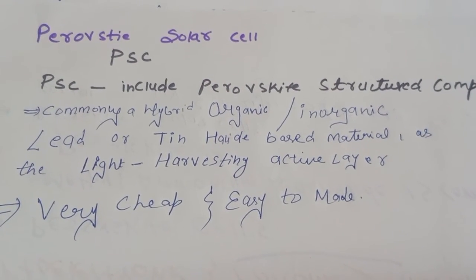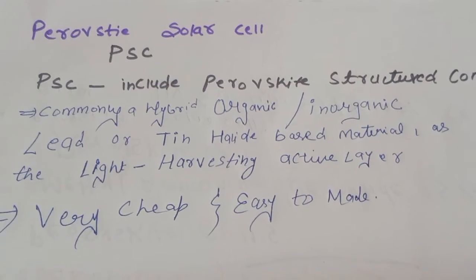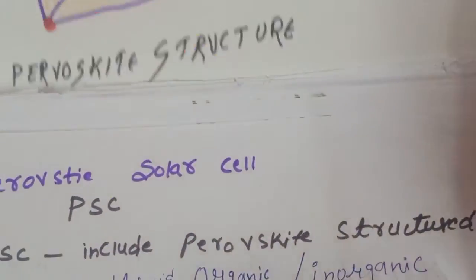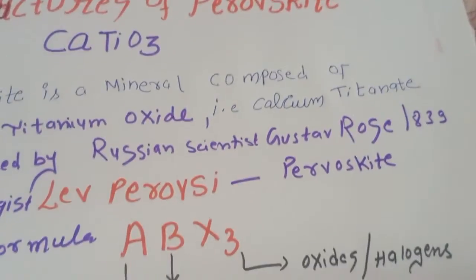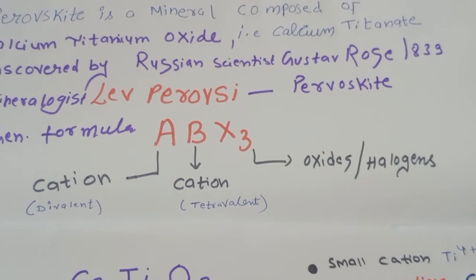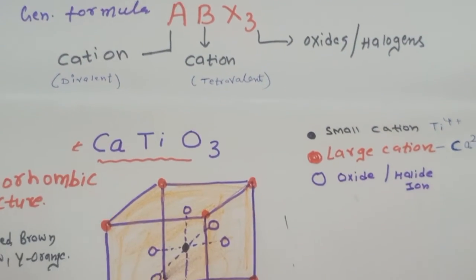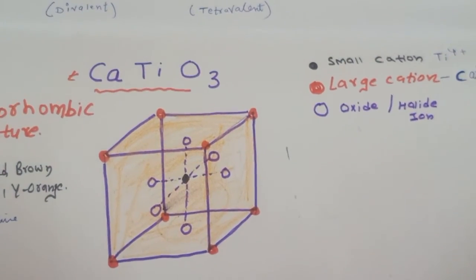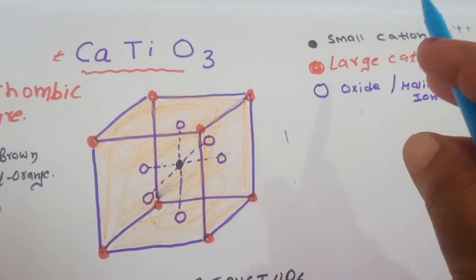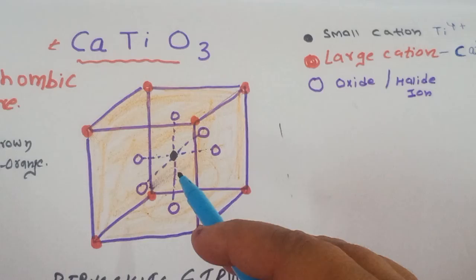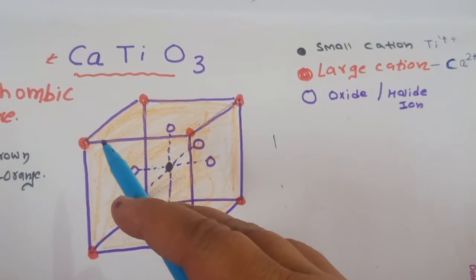So this is all for your perovskite structure. Students, this topic you can prepare very easily. The general formula is ABX3. The main formula is CaTiO3. In this structure in the center, this small cation is Ti4+, and this red are our calcium.